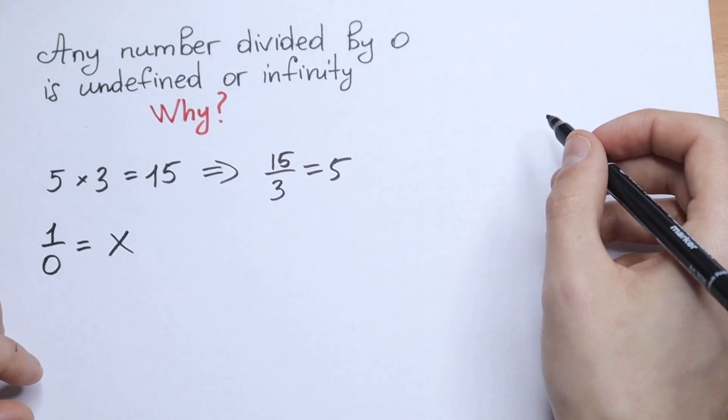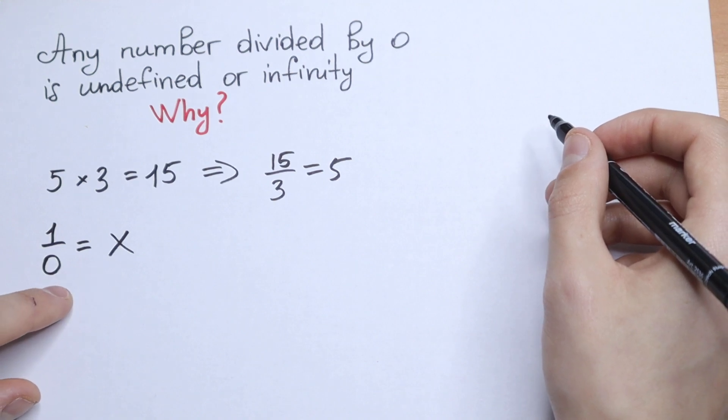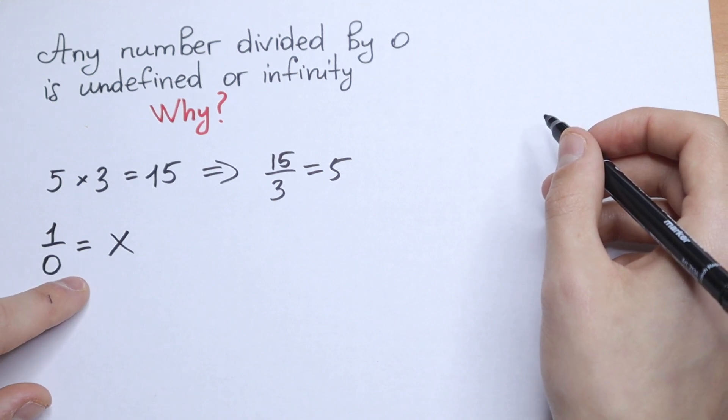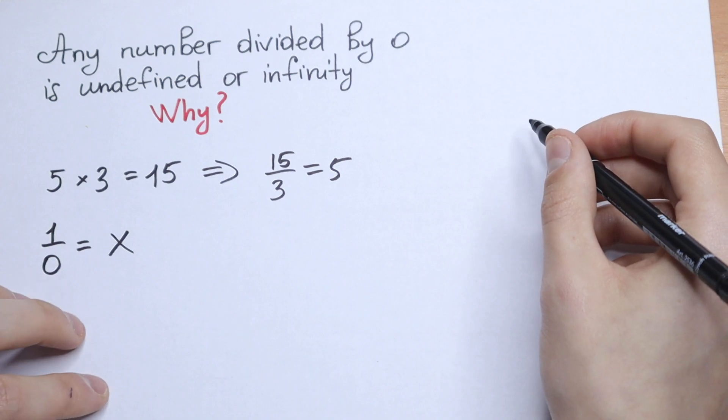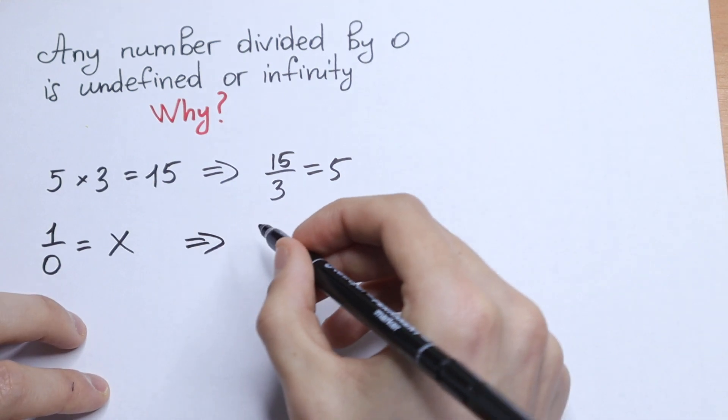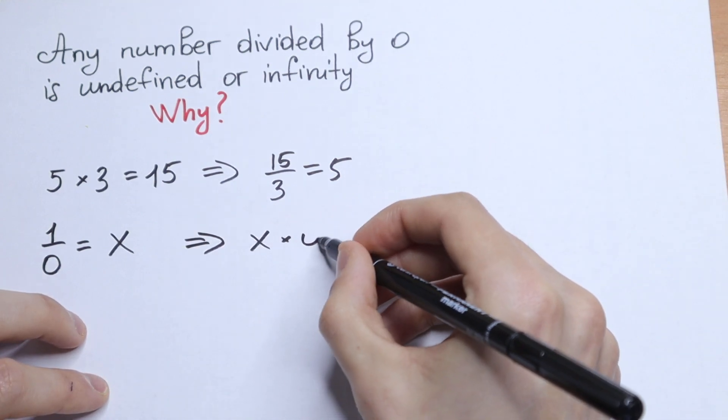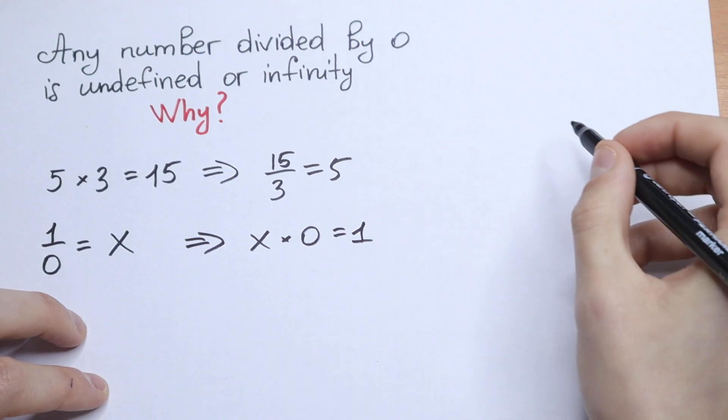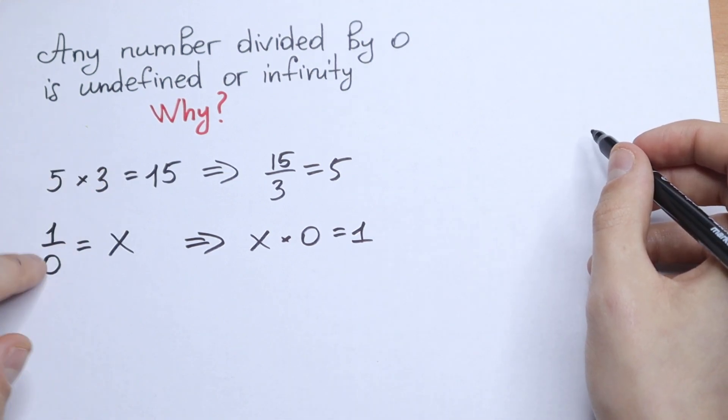But from here, if we multiply both sides by 0, we will have an interesting case. That x times 0 equals 1, just multiplying both sides by this 0.